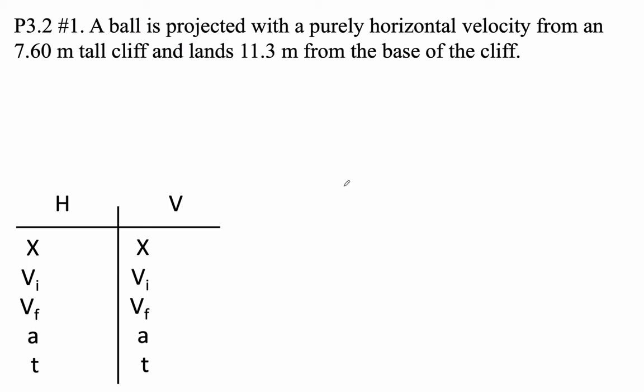A ball is projected with a purely horizontal velocity from a 7.60 meter tall cliff and lands 11.3 meters from the base of the cliff. So let's draw a picture of this.